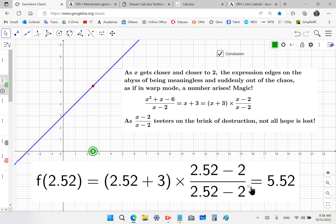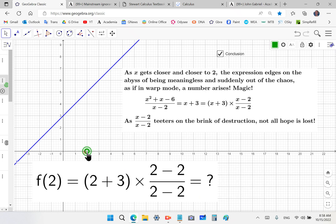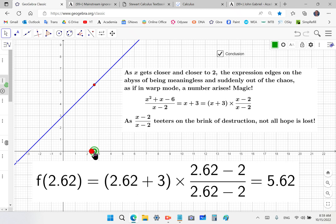So what you've got here is this ridiculous crap whereby this is the only conclusion you can get. As x gets closer and closer to 2, the expression edges on the abyss of insanity, and suddenly out of the chaos, as if in warp mode, a number emerges. If a number emerges because you put lim x goes to 2 in front here, and lim x goes to 2 in front here. Absolute bullshit. That is total crap. If there ever was any crap in mathematics, it's the crap that you get in the last 200 years. Mathematics teachers, calculus teachers, and mainstream professors of mathematics are absolute morons. And I mean, I don't know how to say that in a nicer way. I cannot say it in a nicer way. I have such contempt for those creatures.